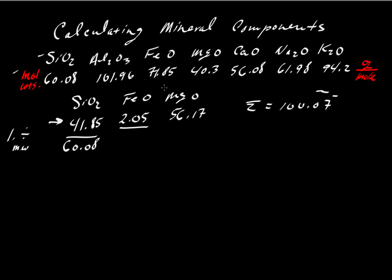For iron, we're going to take 2.05, the observed weight percent, and divide it by 71.85. And then MgO will be divided by 40.3. Now take a look at what's happening here. These are weight percents up here at the top.